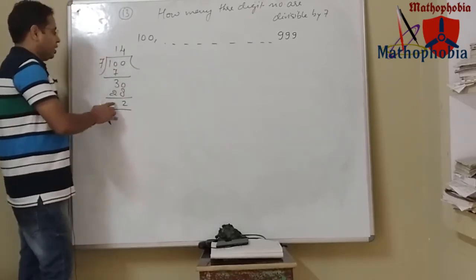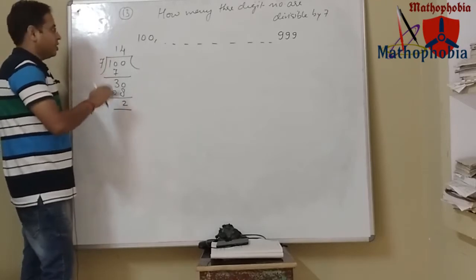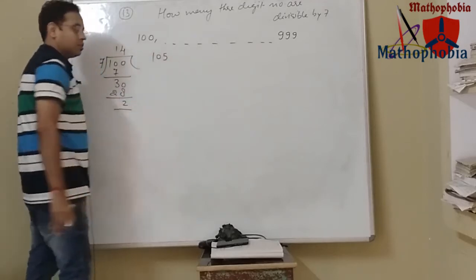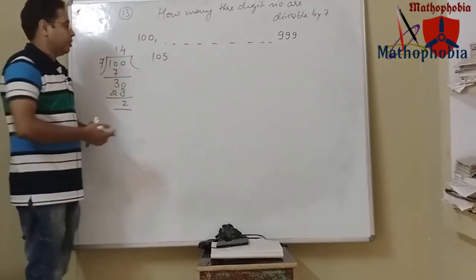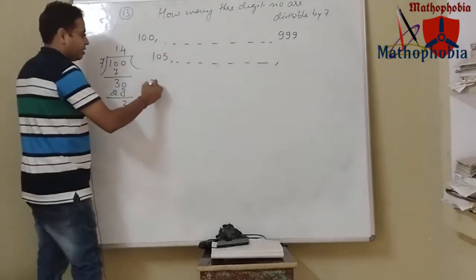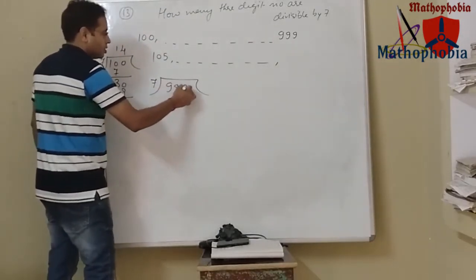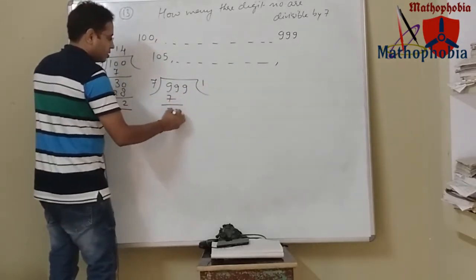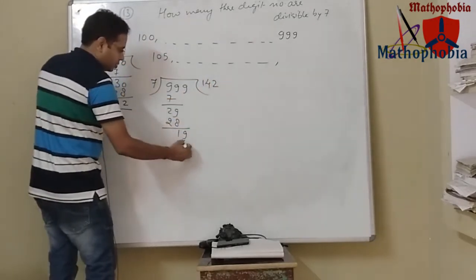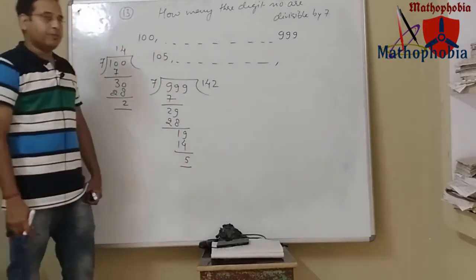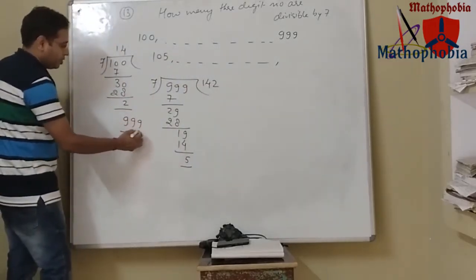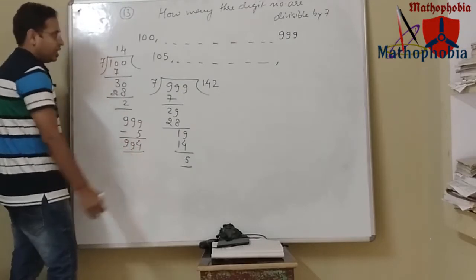So what we will do: we subtract 2 from 7, which gives 5. We will add 5 to 100, so 105 will be the first three-digit number which is divisible by 7. Now to get the last three-digit number divisible by 7, we divide 999 by 7, and a remainder of 5 is left.